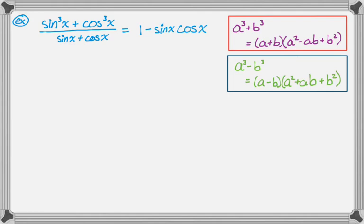A way that a lot of people remember that is they just remember SOAP, which tells you what to do with the signs. So if you look, the sum of cubes is (a + b), so that's a plus; then a² − ab, so that's a minus; and then plus b². And in a difference of cubes, the signs go minus, then plus, plus. So SOAP means: Same sign, Opposite sign, Always Plus. That's actually how I remember it.